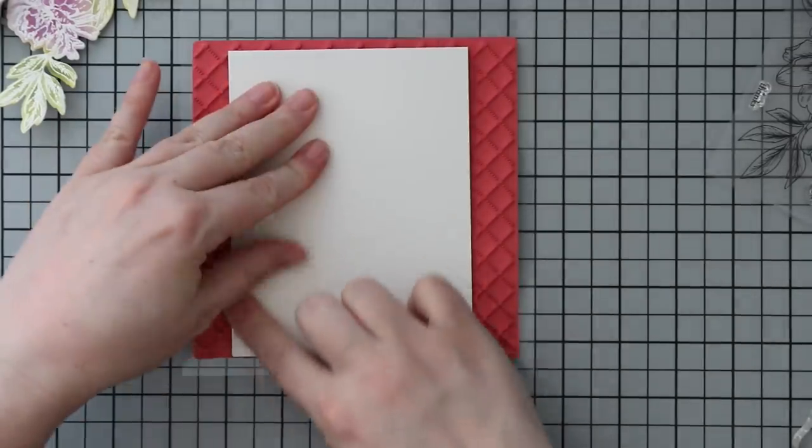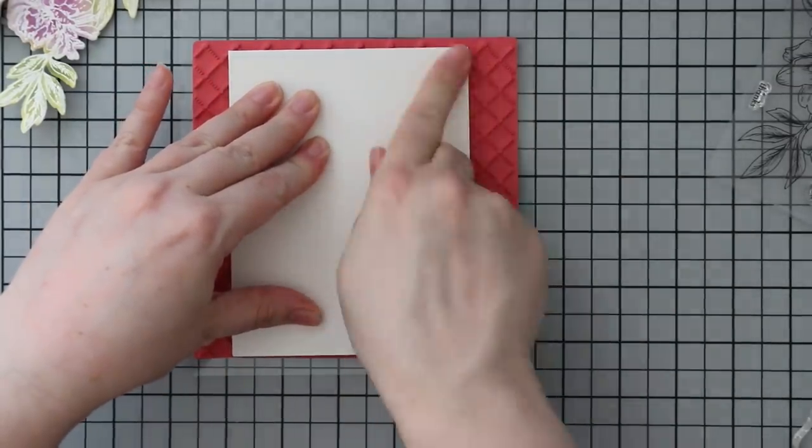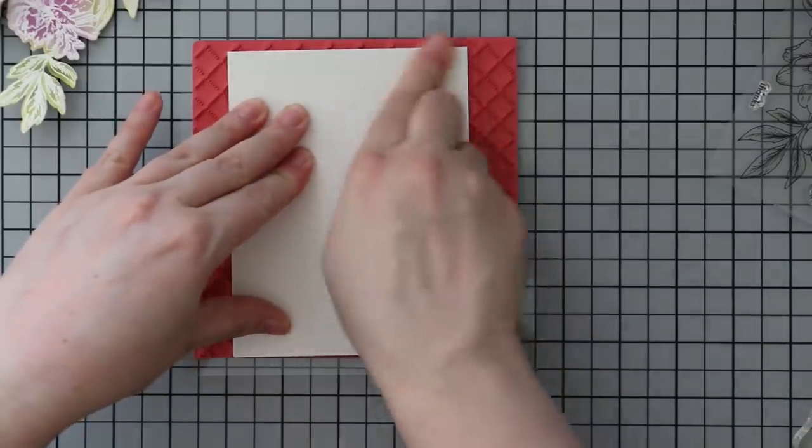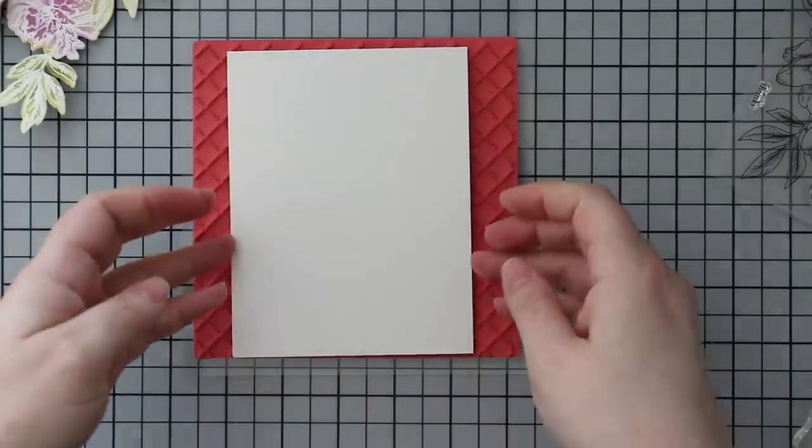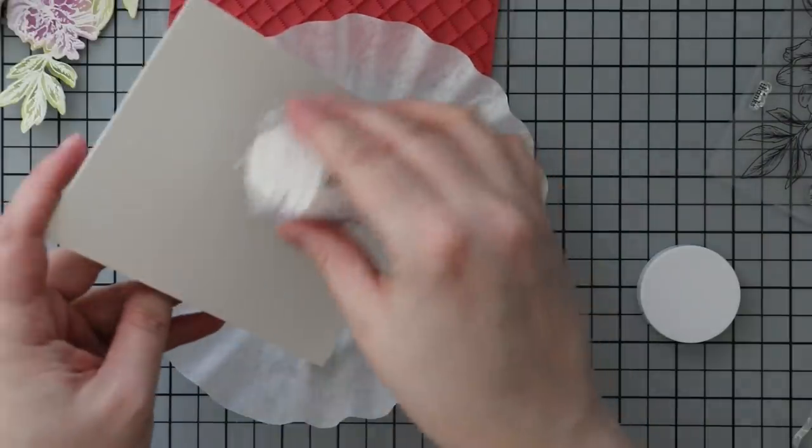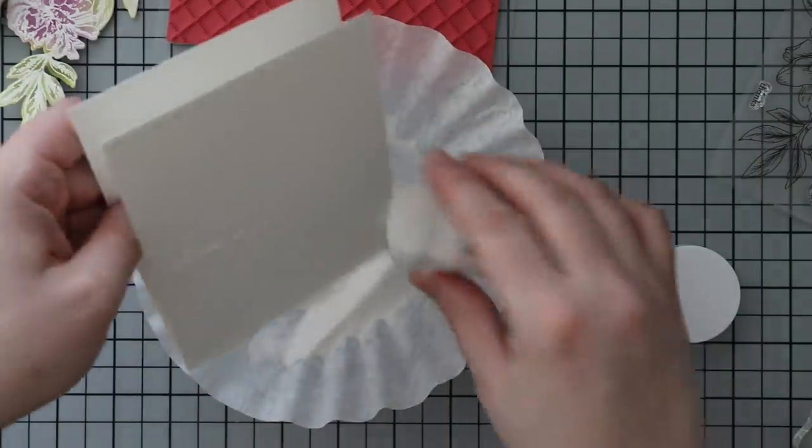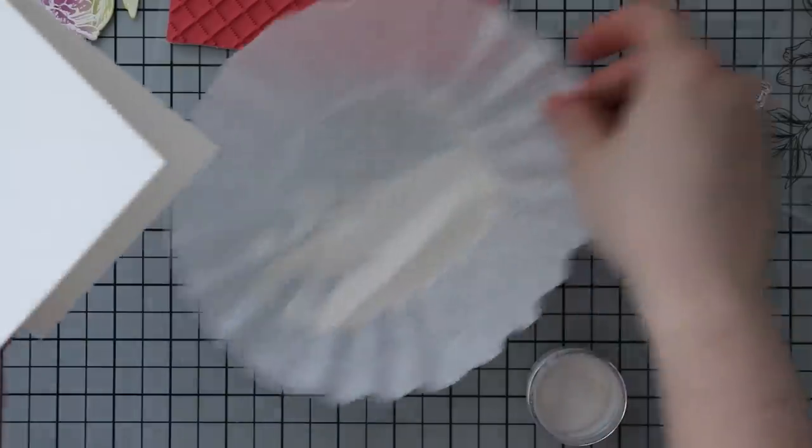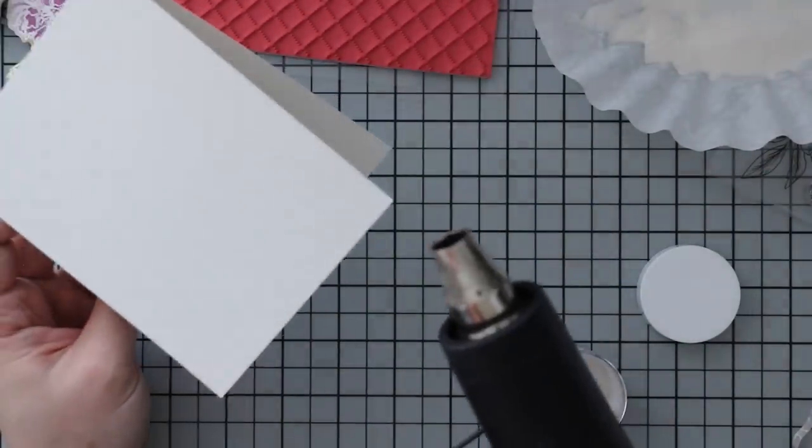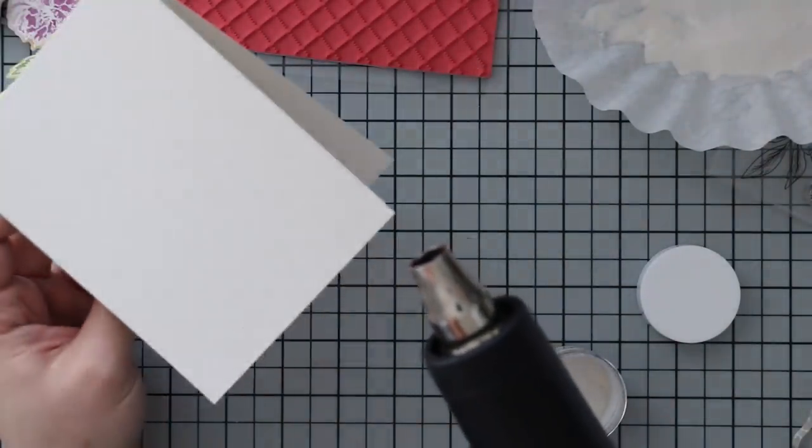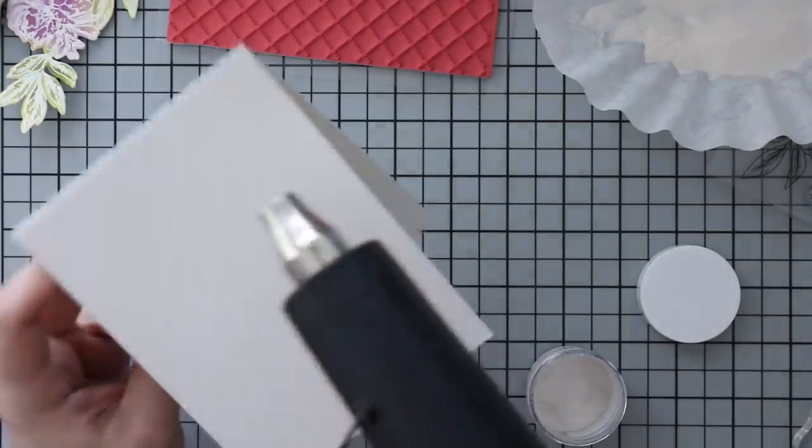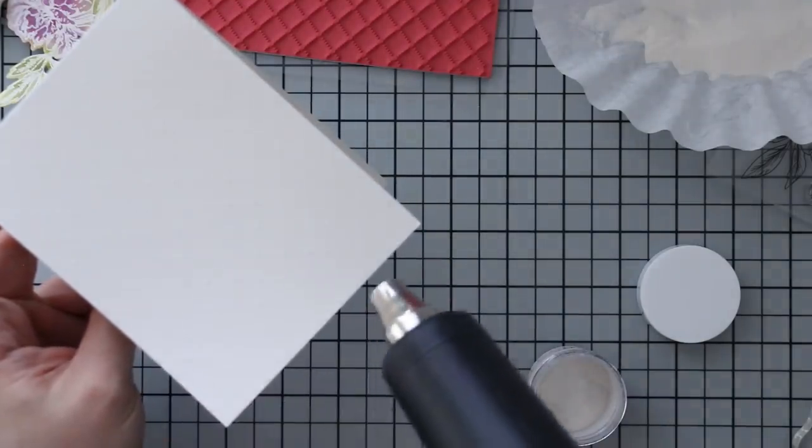For my card base, I have some ivory cardstock and I have Simon's Quilted Hearts background. I'm inking up the background with clear embossing ink and then using the Hero Arts White Satin Pearl embossing powder. It ends up being very subtle but it has that sheen, that nice pearly look.